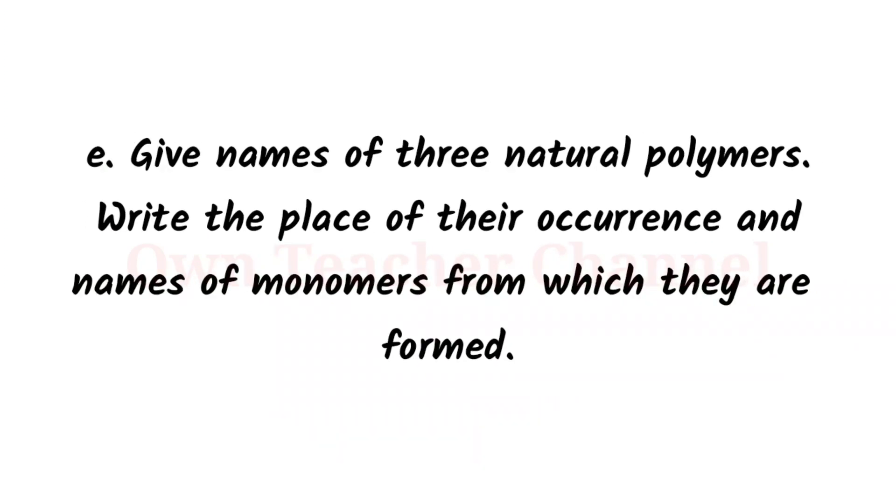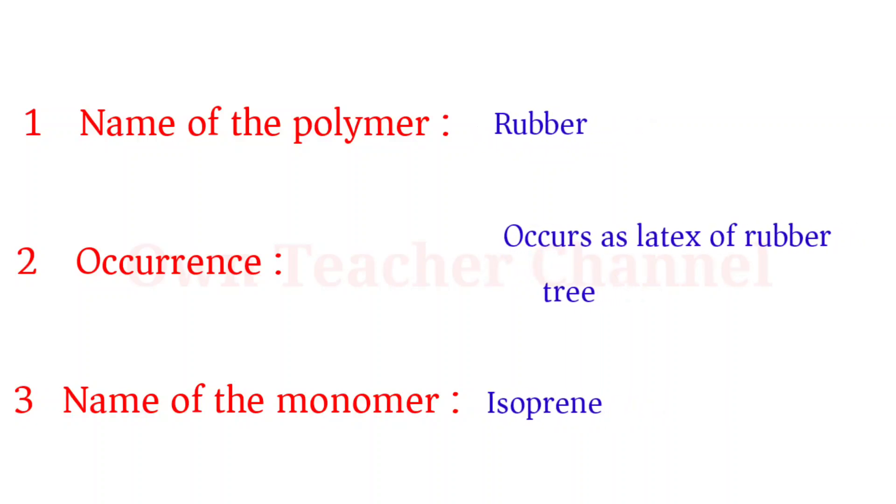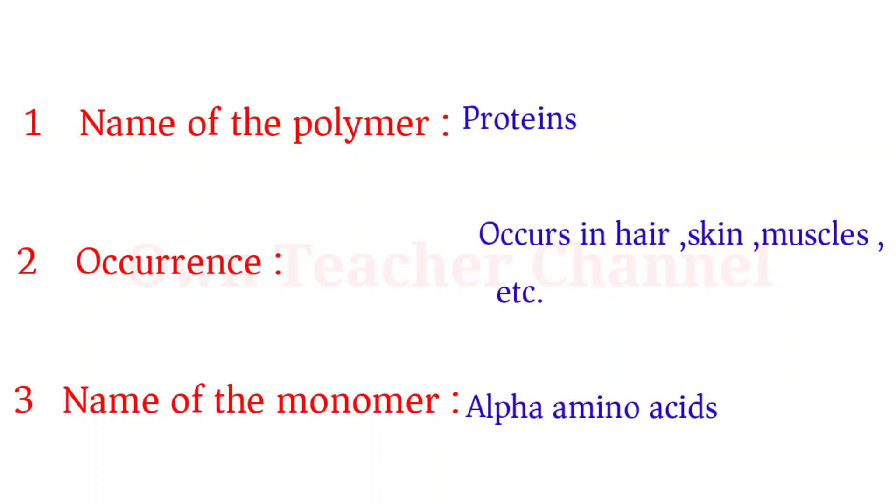Give names of three natural polymers. Write the place of their occurrence and names of monomers from which they are formed. Name of the polymer: cellulose. Occurrence: occurs in wood. Name of the monomer: glucose. Name of the polymer: rubber. Occurrence: occurs as latex of rubber tree. Name of the monomer: isoprene. Name of the polymer: proteins. Occurrence: occurs in hair, skin, muscles, etc. Name of the monomer: alpha amino acid.